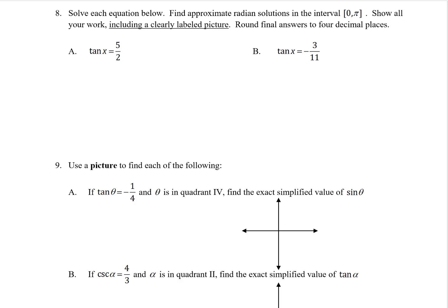Problem number 8. We want to solve each equation, giving approximate radian solutions between 0 and pi. Looking at tangent x equals 5 halves, I want to find all the solutions within one period of the tangent function, which would be between 0 and pi.